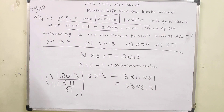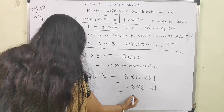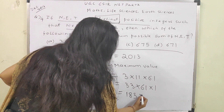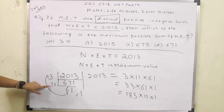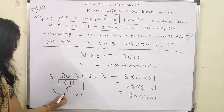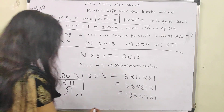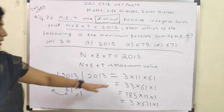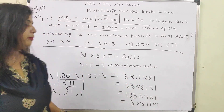Another way: 11 × 61 = 671, so 3 × 671 × 1. These are 4 ways in which 2013 can be written as a product of 3 distinct positive integers. We will consider each one for N + E + T, because we have to find the maximum value of N + E + T.